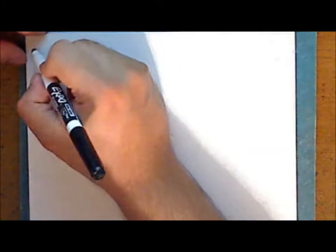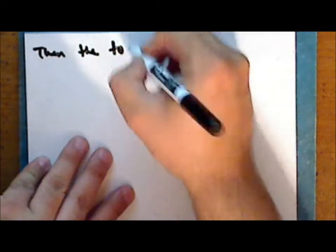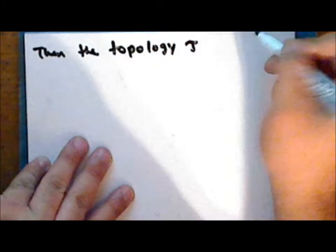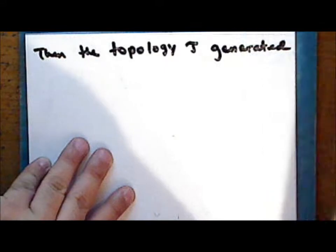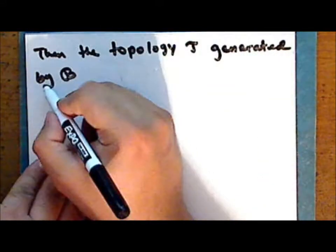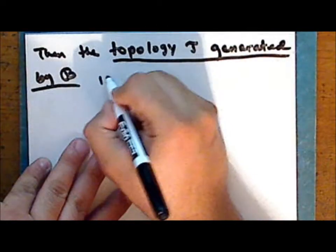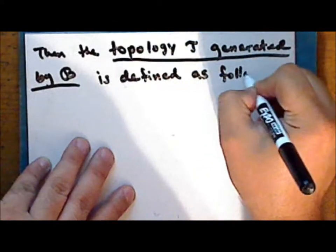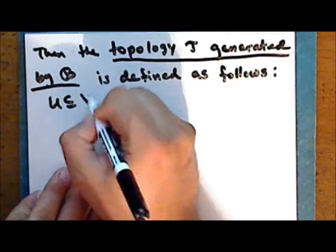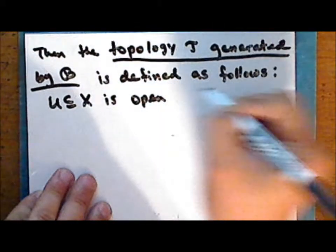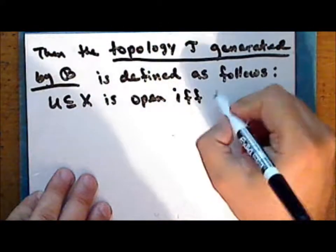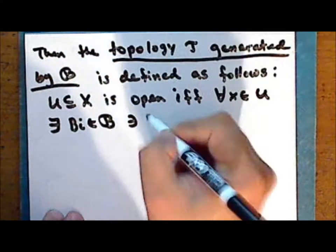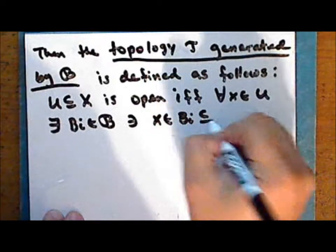Then the topology τ generated by the collection script B is defined as follows: a subset U of X is open — that is, in the topology — if and only if for every point in that set there exists an element in script B such that the point is in this element, which is a subset of the given set U.